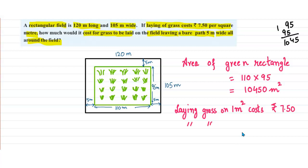So laying grass on 10450 meter square will cost how much?